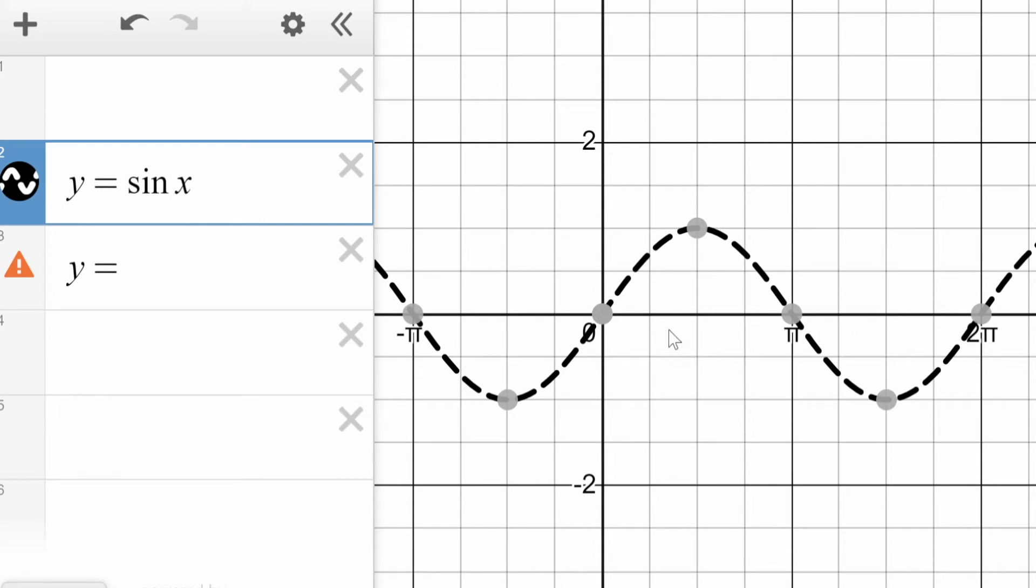Now sometimes when we model real-world situations, we want to have the numbers on the x-axis not being these weird numbers involving π, not those irrational numbers. We want them to be rational numbers, or what you might think of as normal numbers. And to be able to do that, we have to think about how we're gonna change the period here, so that the period is a rational number.